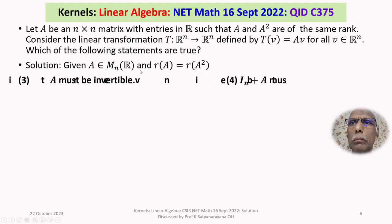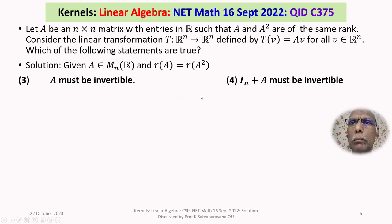We now discuss the solution in detail. We first consider options 3 and 4. Option 3 says A must be invertible, and option 4 says I_n plus A must be invertible. We will determine which of them are true by giving a counterexample.